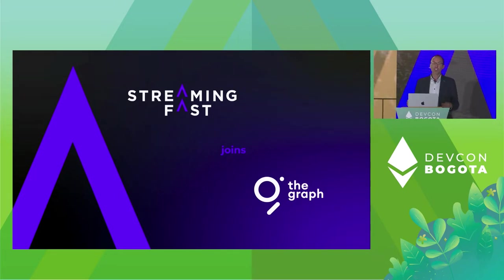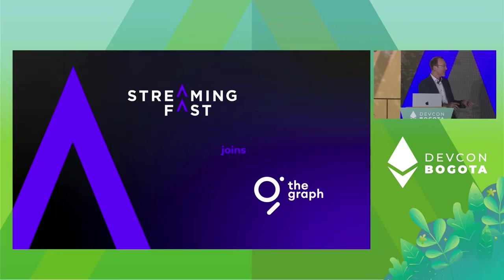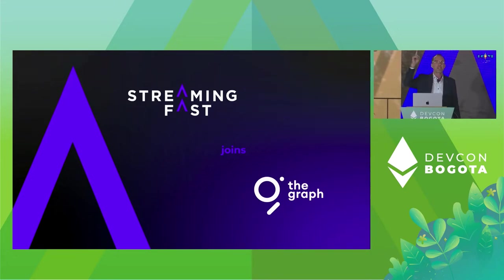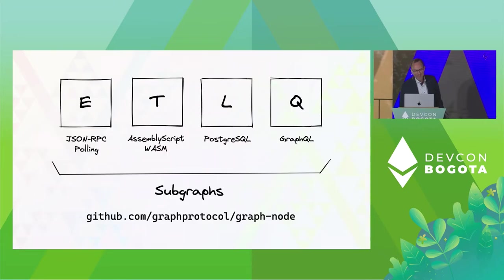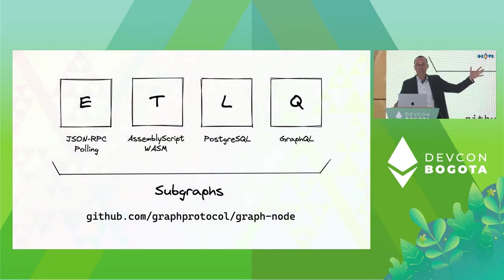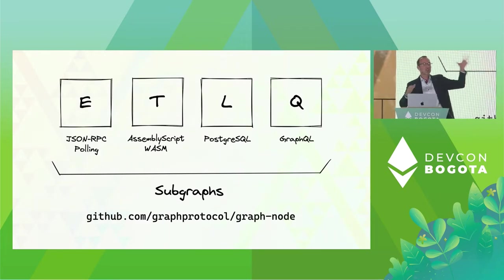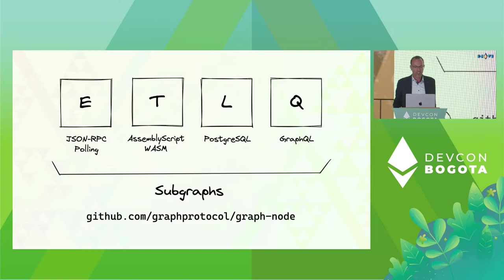Today I'm here to introduce Substreams, which is a powerful new parallelized engine to process blockchain data. Before I can do that, I want to set a bit of context. Perhaps you can raise your hand if you know what subgraphs are. So subgraphs can be thought of as an ETL process — Extract, Transform, and Load. And subgraphs add that little Q there, the GraphQL layer to it.